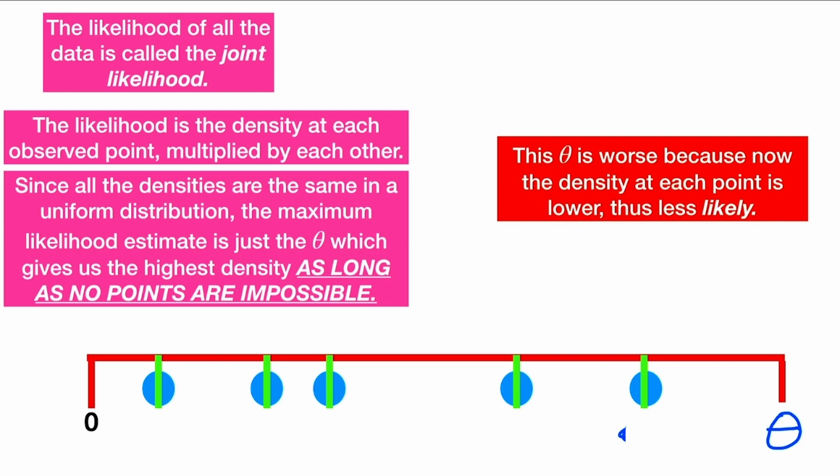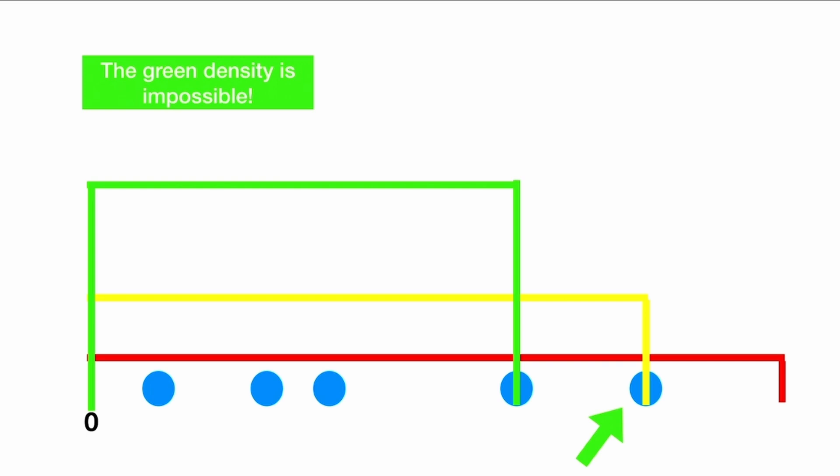This θ here is worse because now the density at each point is lower and thus less likely. We see the green density here is impossible because this point over here is impossible with the green density.